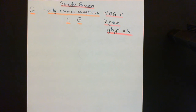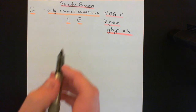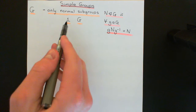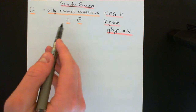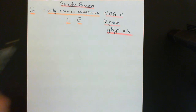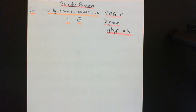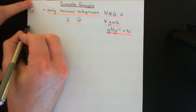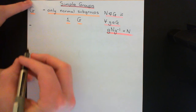So in order to be a simple group, it needs to be true that the only normal subgroups in that group are the trivial subgroup and the entire group, which will always be normal subgroups — if you conjugate these by any element of the group you will always end up with that same subgroup back again. Let me give you an example of an entire family of finite simple groups. It's the trivial example, but it's a good example to start with.